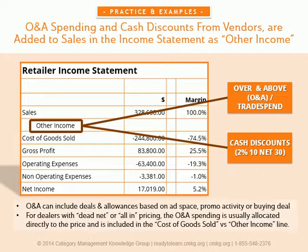Other income can also include cash discounts that are paid by vendors if the terms are met when paying invoices within a specific amount of time. The intent of the discount is to speed payment and thereby provide liquidity to the vendor. As an example of a cash discount, 2% 10 net 30, meaning the retailer must pay within 30 days of the invoice, but will receive a 2% discount if they pay within 10 days of the invoice date.